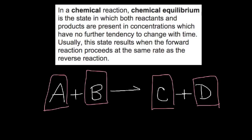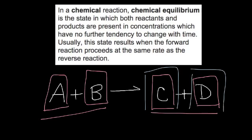Up until now, that's how our classes worked — all our reactants form products. But in real life, when we have nothing but C and D left in that container, these can actually collide together and reform A and B. So A and B form C and D, and then C and D can sometimes hit one another and reform A and B.